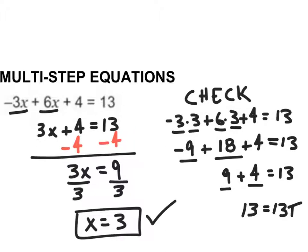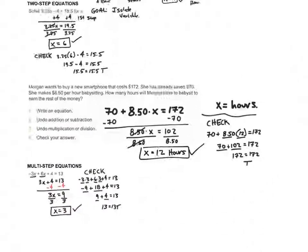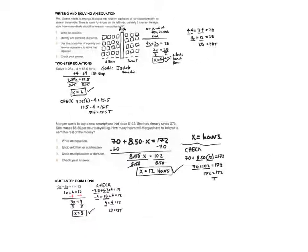Let's check with the original equation: negative 3 times 3 plus 6 times 3 plus 4 — does that give us 13? Negative 3 times 3 is negative 9, 6 times 3 is positive 18, plus 4. Negative 9 plus 18 is 9, and 9 plus 4 is 13. 13 is equal to 13 — that's a true statement, therefore this is my solution. That's all I have for this video — kind of a long one but a good one. Thanks, bye!